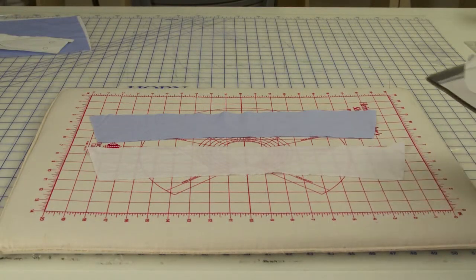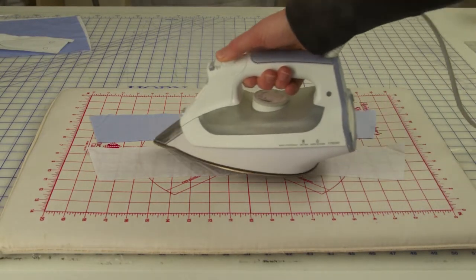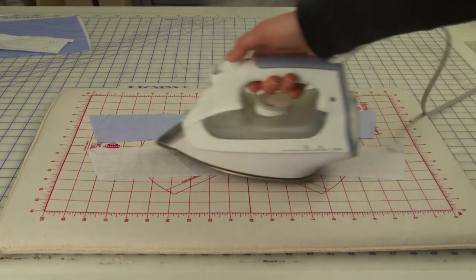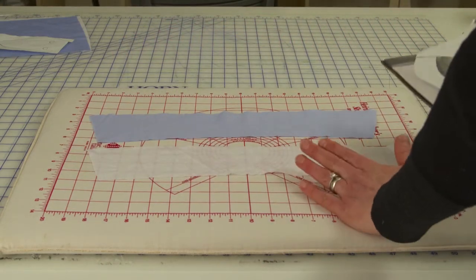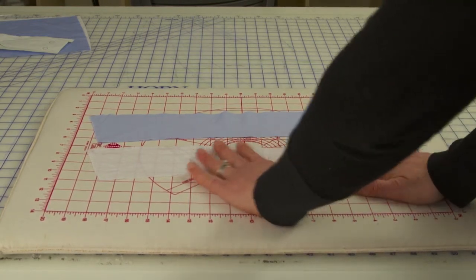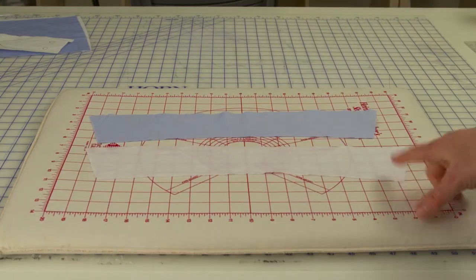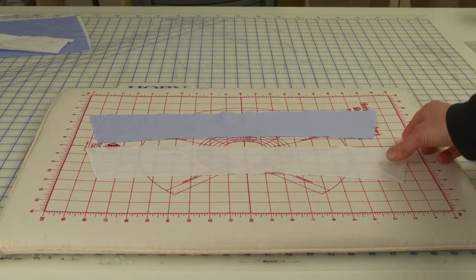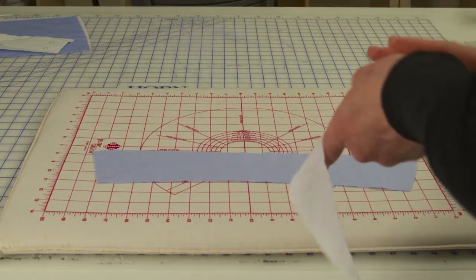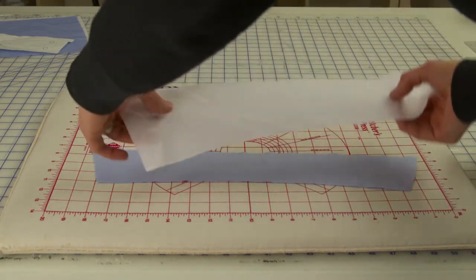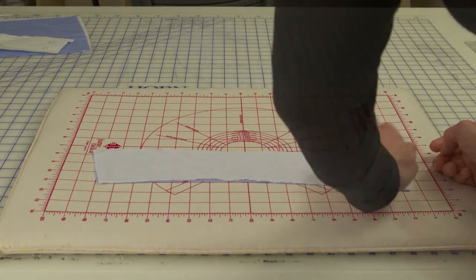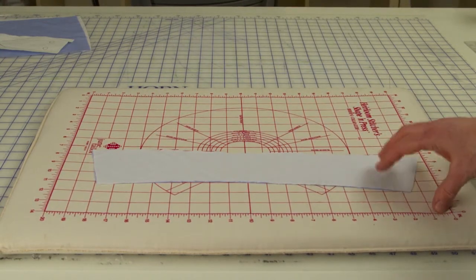To sort of ease these wrinkles is to hover your iron and just give some gentle steam to the glue side of your interfacing just a little bit. Don't touch the iron to the glue because it will stick, but if you do that, then you can finger press it a little bit flatter and it isn't quite as wrinkly. So what I'm going to do is I'm going to take my collar and I'm going to lay my interfacing glue side down on the wrong side of the fabric like this and then I'm going to fuse the interfacing on.